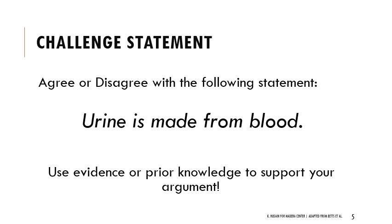The first thing I want you to do is look at this challenge statement: 'Urine is made from blood.' Think about whether you agree or disagree and why. When I look at this statement, I would say I agree. Urine is not blood, but it's certainly made from components found in blood and through the filtration of blood. We'll look at data over this lecture that shows similarities and differences between urine, filtrate, and blood plasma.